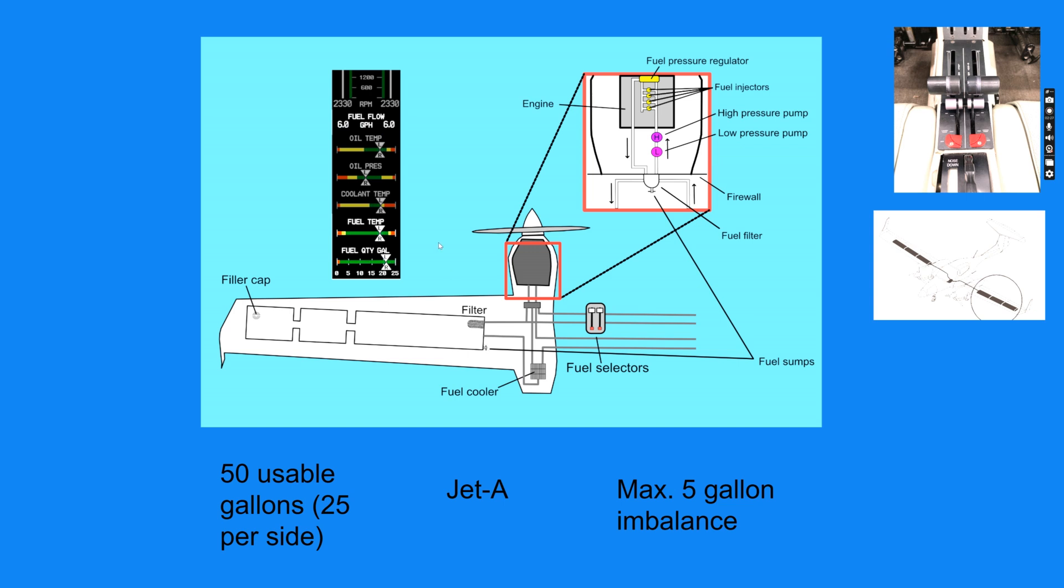Fuel quantity indications displayed to the pilot on the MFD. There are temperature and quantity probes in the wing tanks, and those readouts are displayed here. There's also fuel flow quantity indications here in gallons per hour.